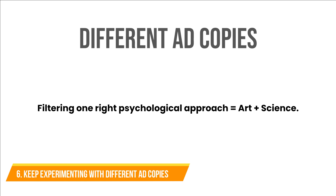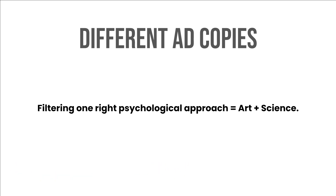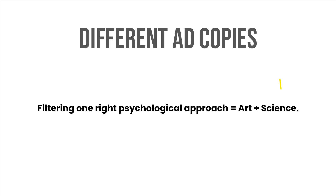6. Keep experimenting with different ad copies. Use different psychological approaches to understand the right messaging trick for your brand. Filtering the one right psychological approach equals art plus science. Don't stick with a single ad copy. Use analytics to measure the success of all the ads in each group. Shortlist the best performing and make modifications accordingly.